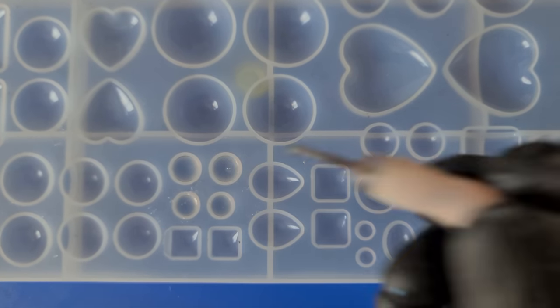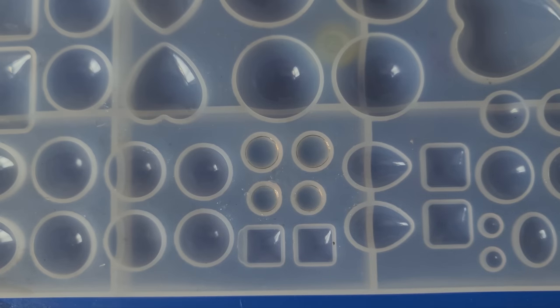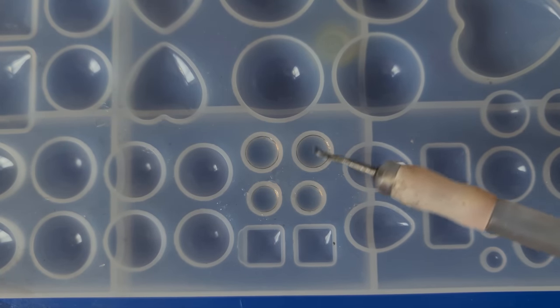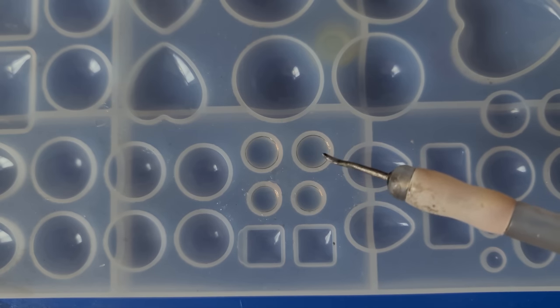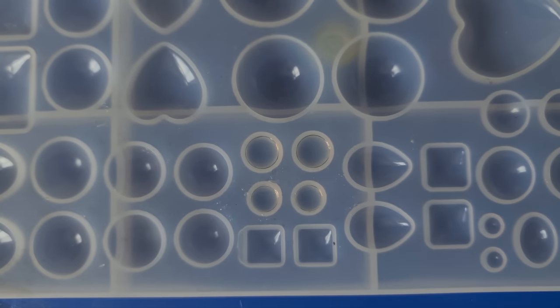Now just get them all out and you want these flush, flat on the back. So bear in mind that UV resin shrinks slightly, so add one drop more than what you need. And like I said, just cure those for a minute on both sides.